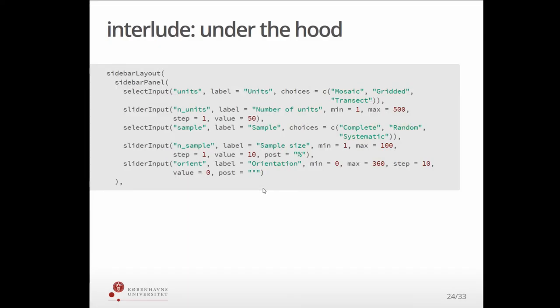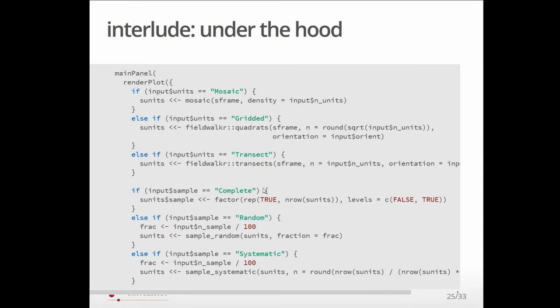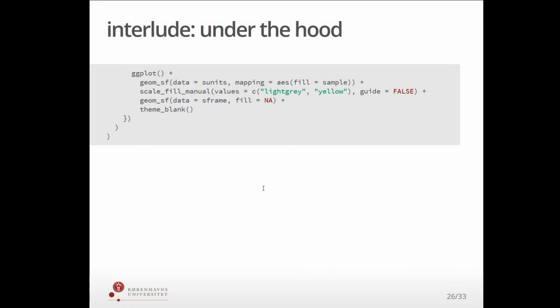So then just to step out of the demo for a minute, the widgets, the Shiny widgets that I've just shown, are very easy to put together in R. You simply have this way of defining the inputs. And then Shiny takes care of all the layout for it nicely and automatically. Then there's some logic that maps those inputs onto Fieldwalker functions, in this case, functions with different types of sample frames. And finally, we just have a simple plot, ggplot based, that will refresh as you change the form.